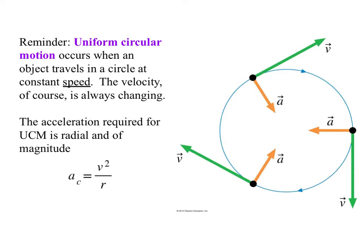Reminder, a uniform circular motion occurs when an object travels in a circle at constant speed. The velocity, of course, is always changing. And the acceleration for uniform circular motion is radial and of magnitude V squared over R. It's the uniformity here, the fact that there's uniform speed, that says this is the only part of the acceleration.